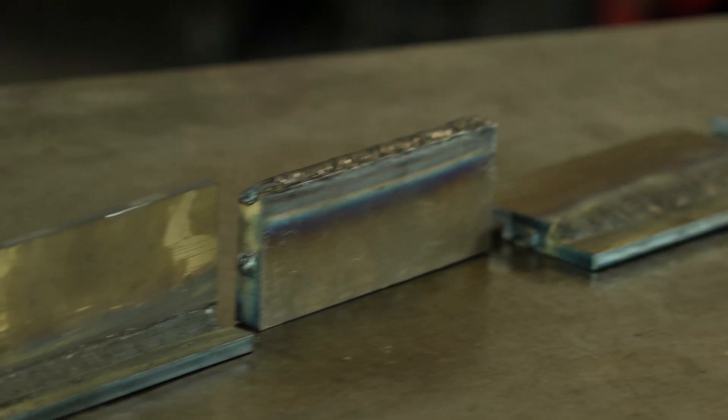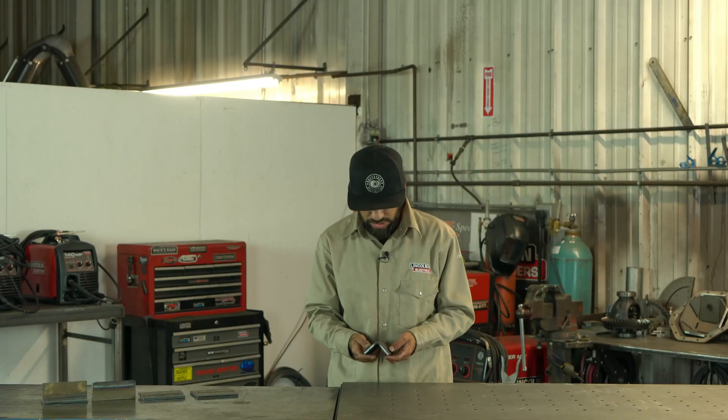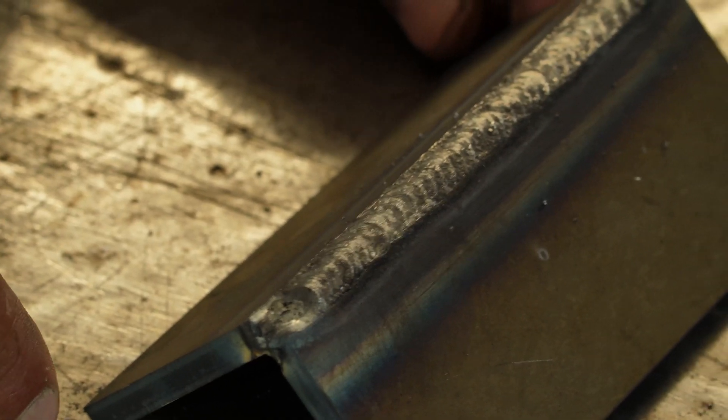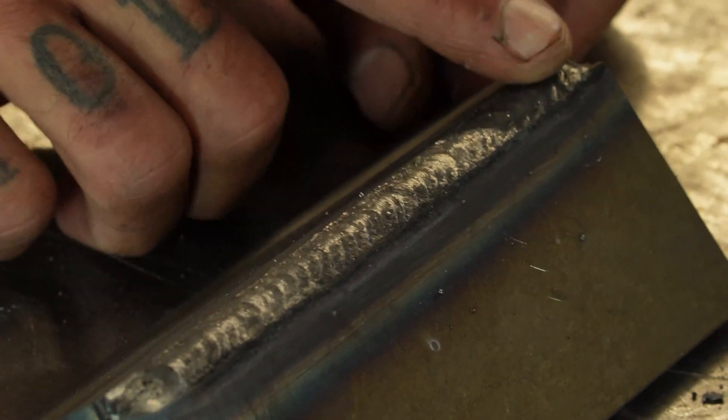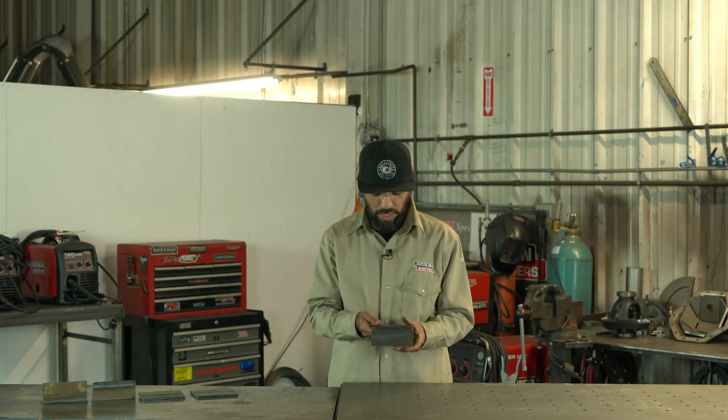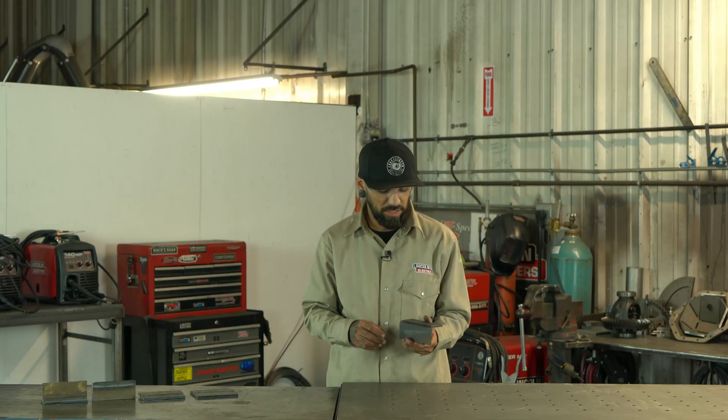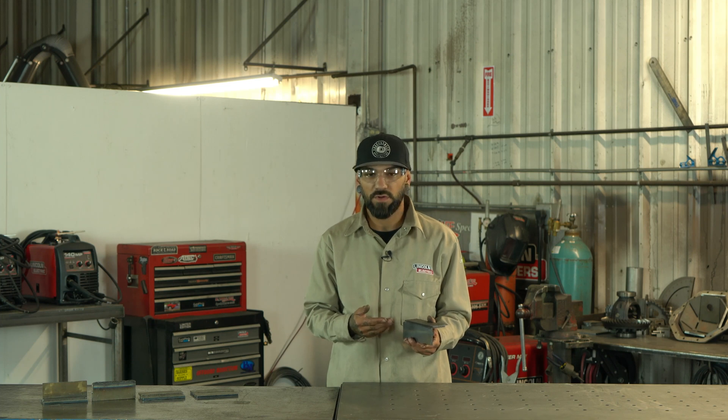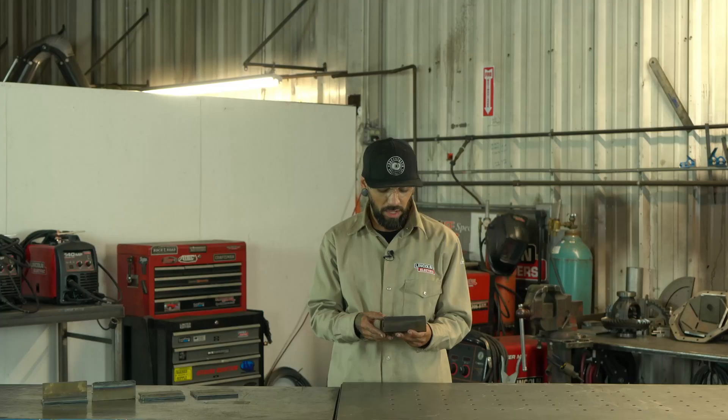Next one we got is our corner joint. As you can see, it's just two pieces of material butted up at a 90 degree angle into a corner. A lot of times you'll see these on bumpers, different vehicles have a lot of corner joints. It's a very common joint in a lot of structural welding. We actually make a lot of products that have the corner joint in it.